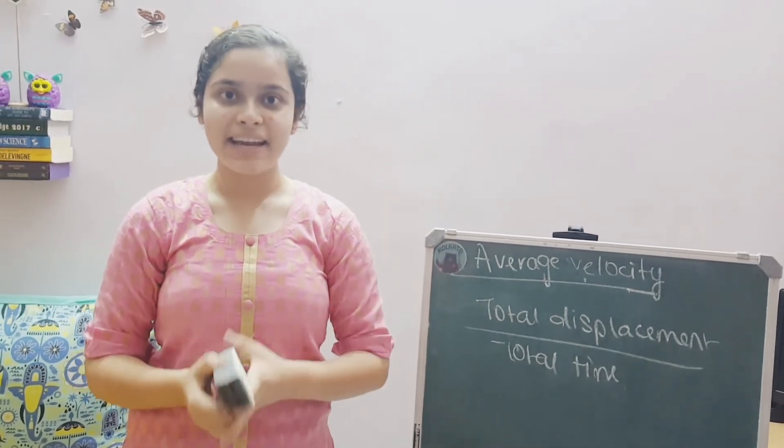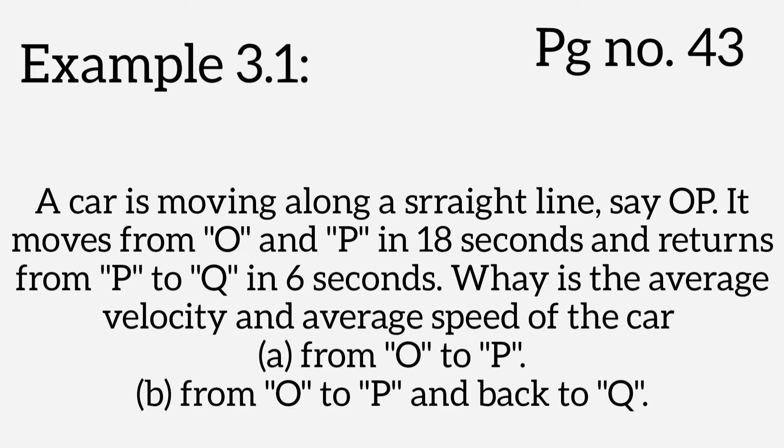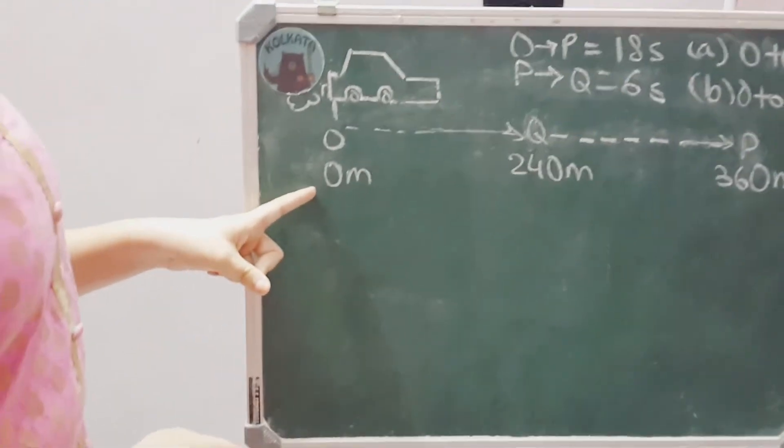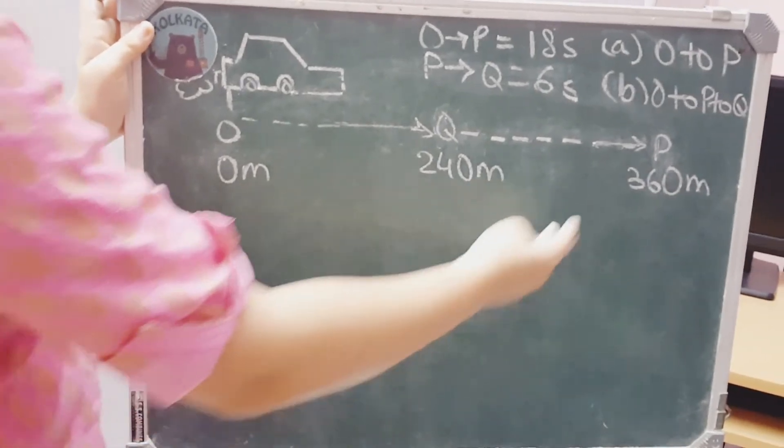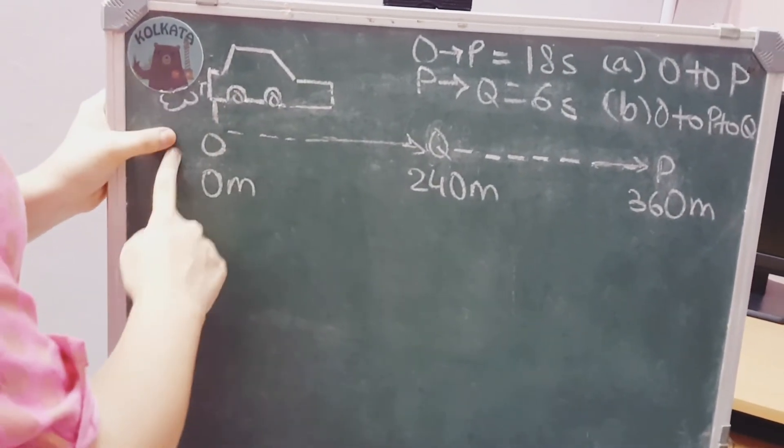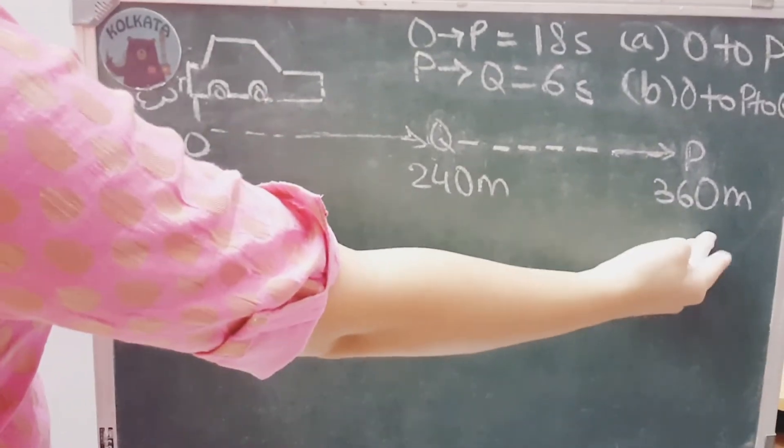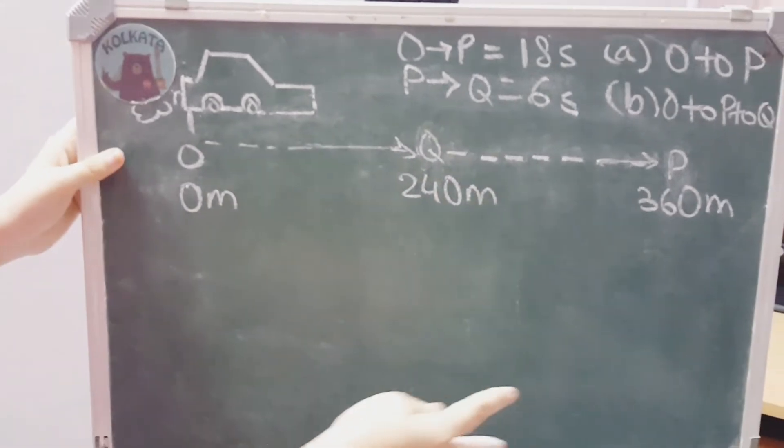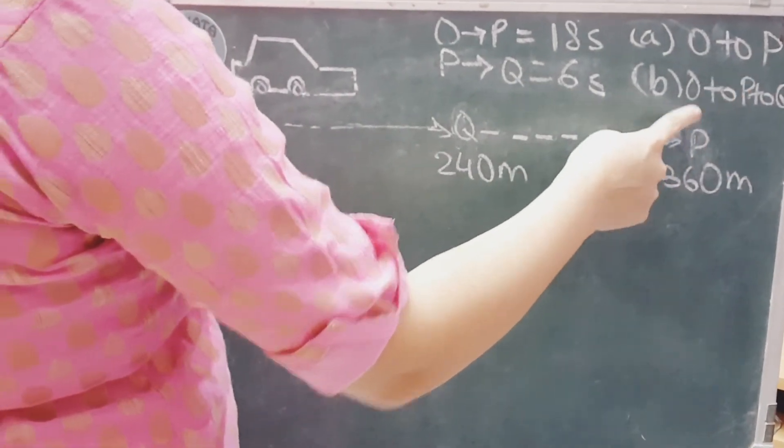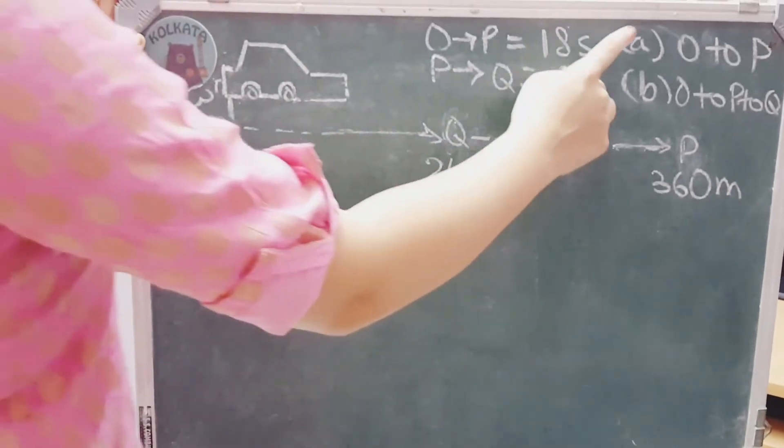Note down these formulae and get ready for a numerical. You just read the question and as per the question, the car is at position O that is at 0 meters. And here position Q is at 240 meters and P is at 360 meters. It is given that the time taken for the car to travel from O to point P is 18 seconds. And from point P back to point Q is 6 seconds. Here, we need to find the average speed and the average velocity from point O to point P. And the second part from point P, O to P and then back to Q.